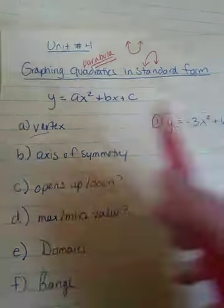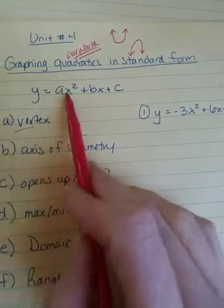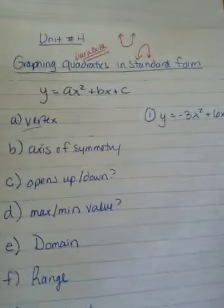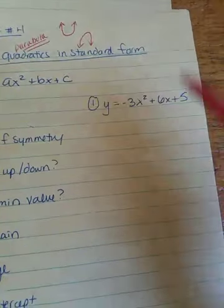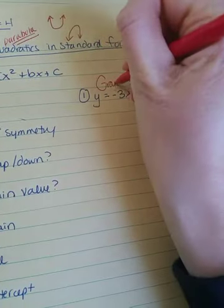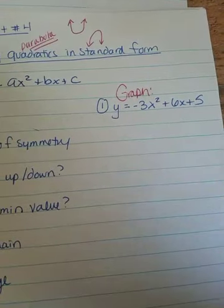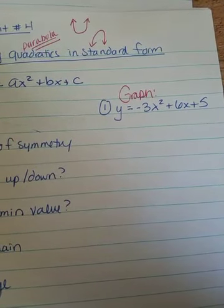So, remember, standard form of a quadratic is y equals ax squared plus bx plus c. We've been doing this for a while now. And the first one we're going to look at is, say I asked you to graph, I'm going to add that in, the function y equals negative 3x squared plus 6x plus 5.